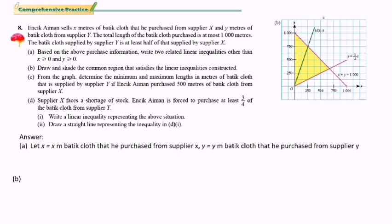Now we look at the first piece of information: the total length of batik cloth purchased is at most 1,000 meters. The key word is 'at most', which means maximum — it cannot be more than. So the inequality symbol will be less than or equal to. Therefore, the first inequality is S + Y ≤ 1,000.